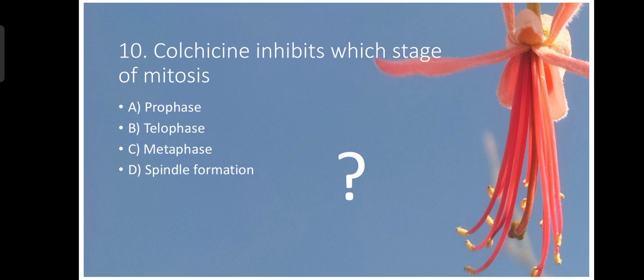Number ten. Colchicine inhibits which stage of mitosis? This question has also question mark. Colchicine inhibits the metaphase and in metaphase spindle formation takes place. So metaphase and spindle formation both are inhibited by Colchicine. So you people may also comment for this question.